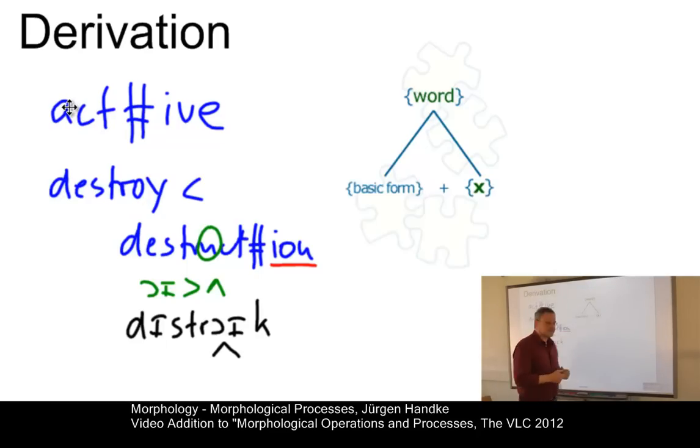The set of elements that constitutes the possible derivatives of one base form is called a word family.